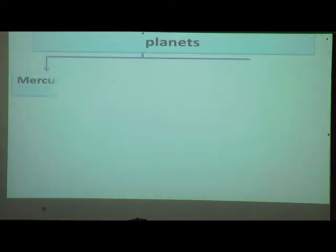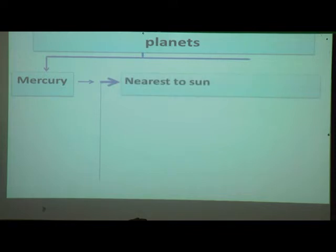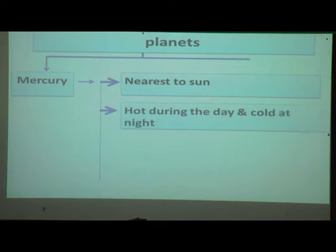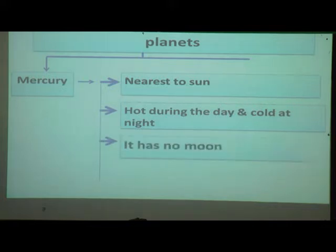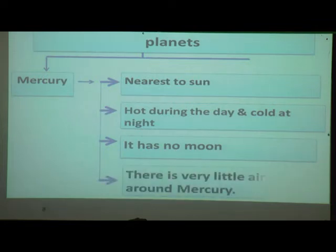The first planet is Mercury. It is nearest to the sun. Mercury is hot during the day and cold at night. It has no moon and there is very little air around Mercury.